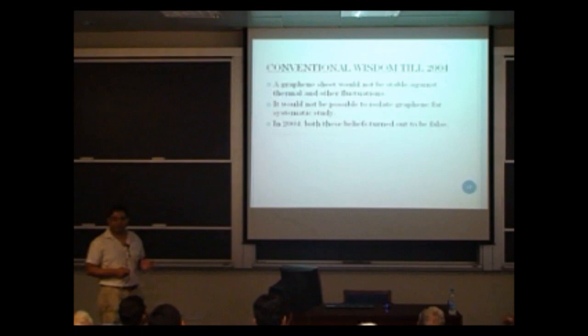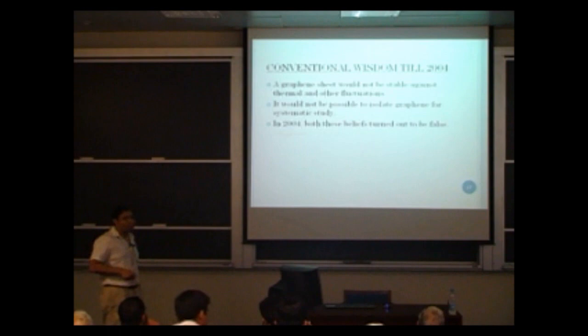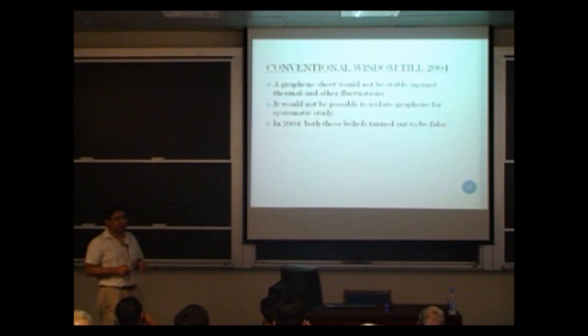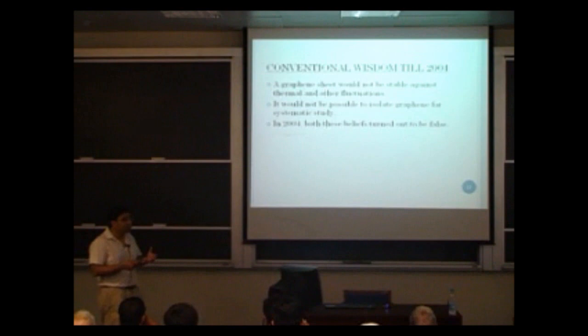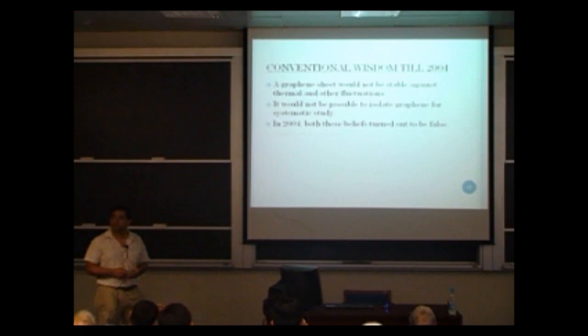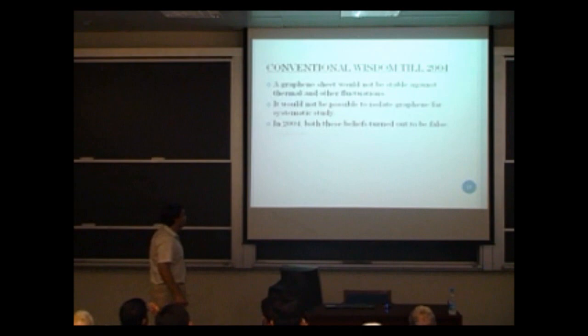Before the discovery of graphene, what was the conventional wisdom? The conventional wisdom was that a two-dimensional sheet would not be stable. At any finite temperature, atoms vibrate about their equilibrium positions. There is the Mermin-Wagner theorem in condensed matter physics, which says that there cannot be long-range order in dimensions less than three. People believed that thermal fluctuations of atoms about their mean positions would result in melting of the solid — so you would not have a two-dimensional solid structure, and it would not be possible to isolate graphene.